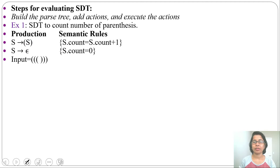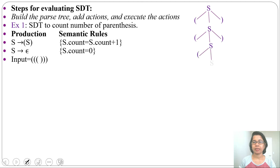First step: construct the parse tree. From S we derive start bracket S end bracket. We need three start brackets, so again from S we derive start bracket S end bracket, and then again from S we derive start bracket S end bracket. Now three start brackets and three end brackets are covered. From S we derive epsilon. This is the parse tree — you can construct it top-down or bottom-up.